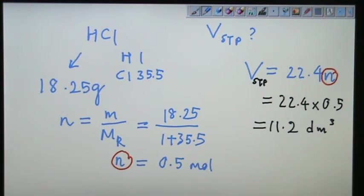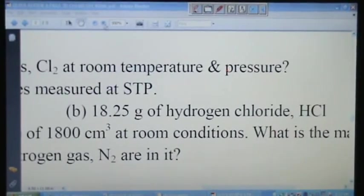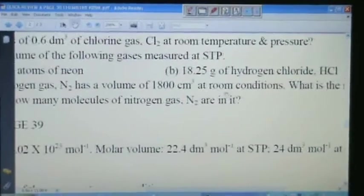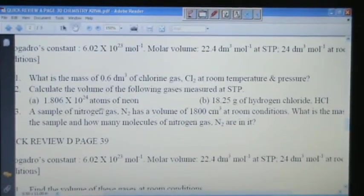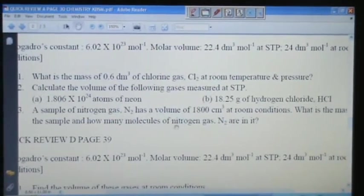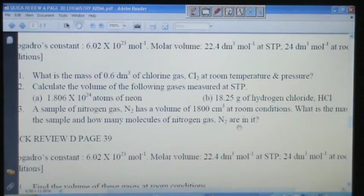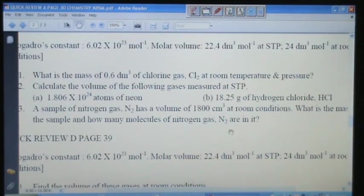Let's try question number 3. A sample of nitrogen gas N2 has a volume of 1008. Let's look at it. Let's zoom out. Look here. Sample of nitrogen gas N2 has a volume of 1008 cm cubed at room condition. What is the mass of the sample and how many molecules of nitrogen gas are in it. So what we do is we piece together all the information.